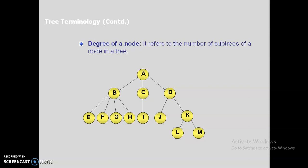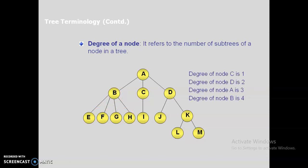Degree of a node refers to the number of subtrees of that node. Node A has degree 3 because it has three subtrees: B, C, and D. Node B has degree 4. Degree of node C and degree of node D is 2. Node K consists of L and M. Among all nodes, the highest degree is 4, so the degree of this tree is 4.